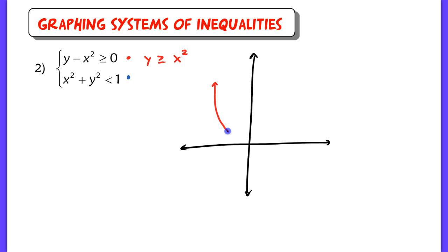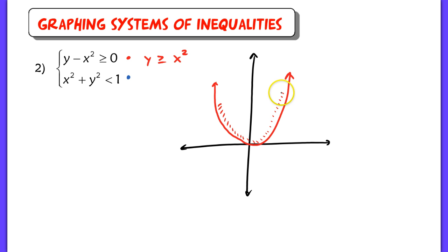I'm just going to sketch this — it doesn't have to be beautiful. We'd have the vertex at (0, 0). It would be a solid line, and we would shade above this parabola. These points represent the values that are greater than or equal to x squared.